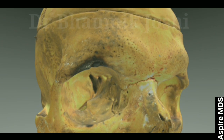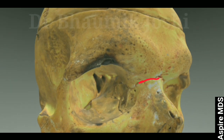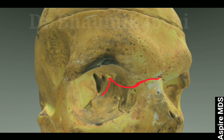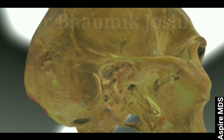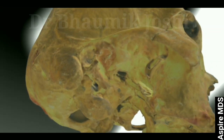The fracture line starts from the frontonasal suture and passes through the frontomaxillary suture. It then goes posteriorly through the lacrimal bone and ethmoid bone — within the ethmoid bone it creates a comminuted fracture because the ethmoid is fragile. It then reaches the optic foramen; because the optic foramen has a dense ring of bone surrounding it, it will not fracture. The fracture line is deflected downwards and laterally along the inferior orbital fissure, reaching the posterior surface of the maxilla.